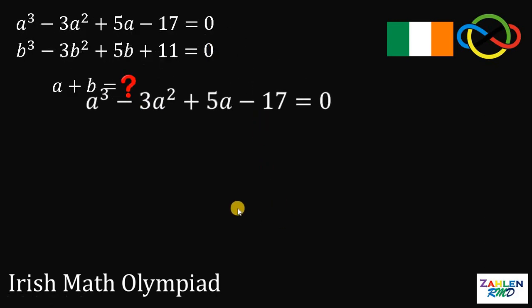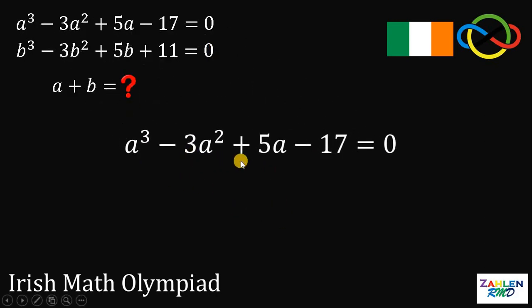First thing to do is to get this equation. We have A cubed minus 3A squared plus 5A minus 17 equals 0. How are we going to answer this question? One thing to notice is the first two terms, A cubed minus 3A squared. This reminds me of the expansion of X minus 1 cubed. So we have X cubed minus 3X squared plus 3X minus 1. How are we going to relate this expansion, this identity, to our given equation right here?